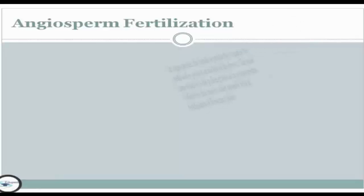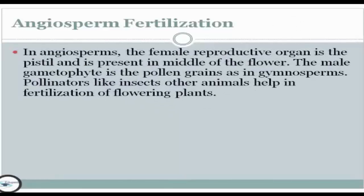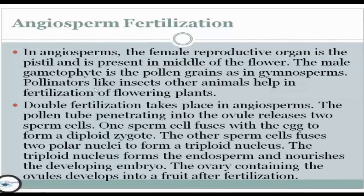Next, we have angiosperm fertilization. In this process, the female reproductive organ is the pistil, present in the middle of the flower. The male gametophyte is the pollen grain, as in gymnosperms. Pollinators like insects and other animals help in fertilization of flowering plants. Double fertilization also takes place in angiosperms.